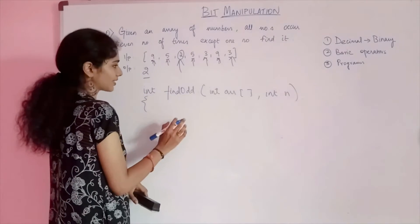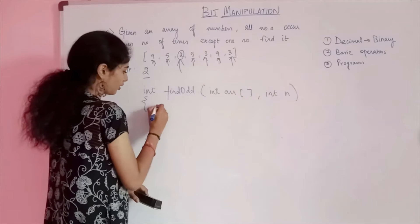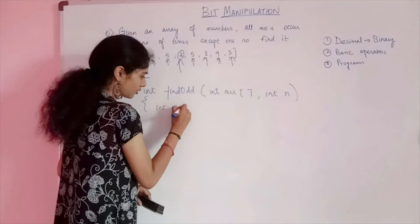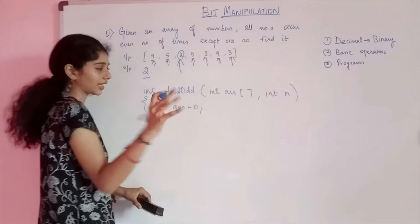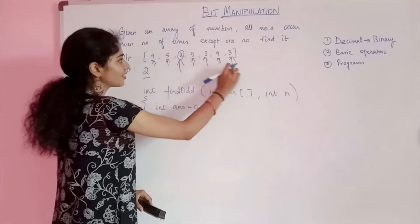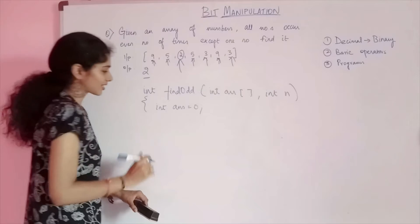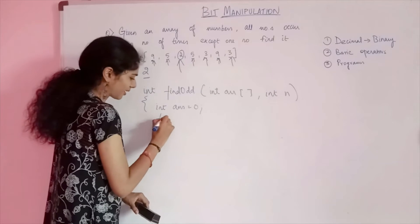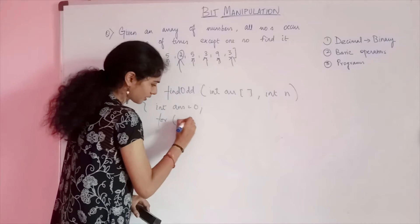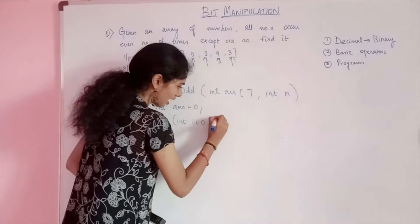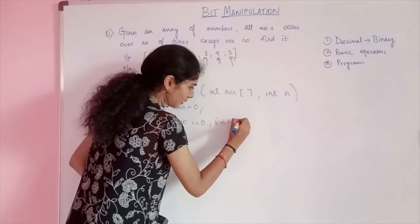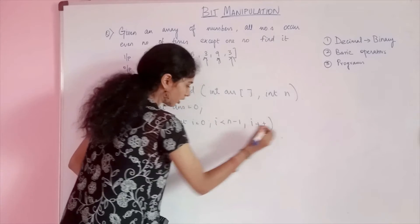What I am going to do is, int answer equals 0 right now. I don't know what the answer is, but I am going to traverse the entire array. For int i=0, i is less than n, i++.